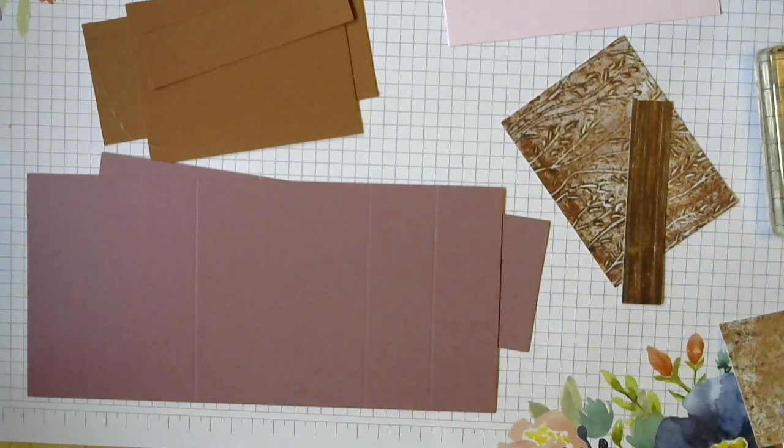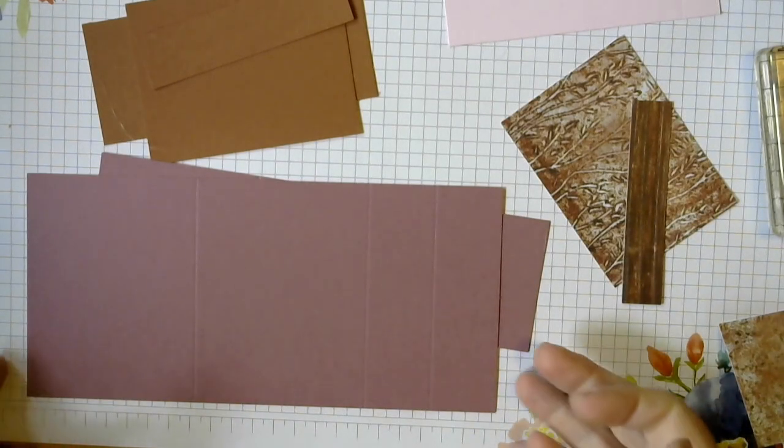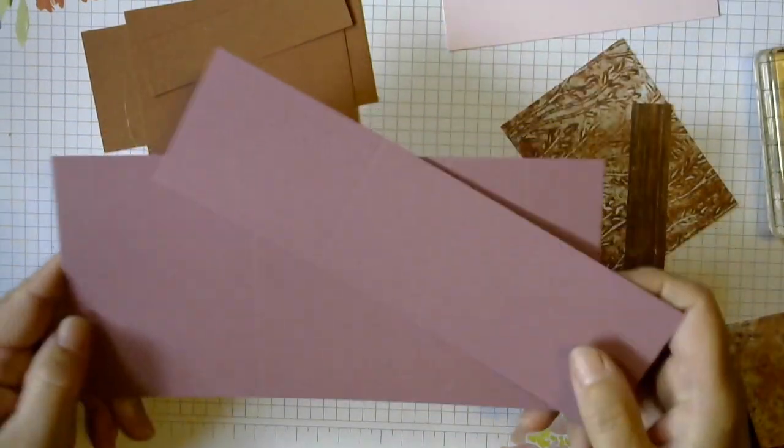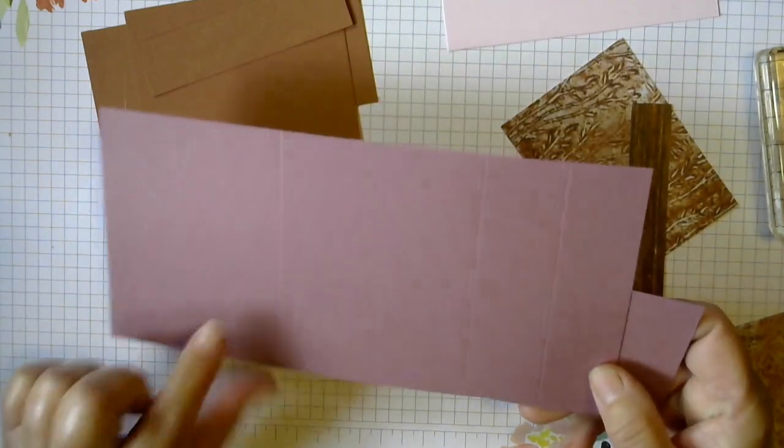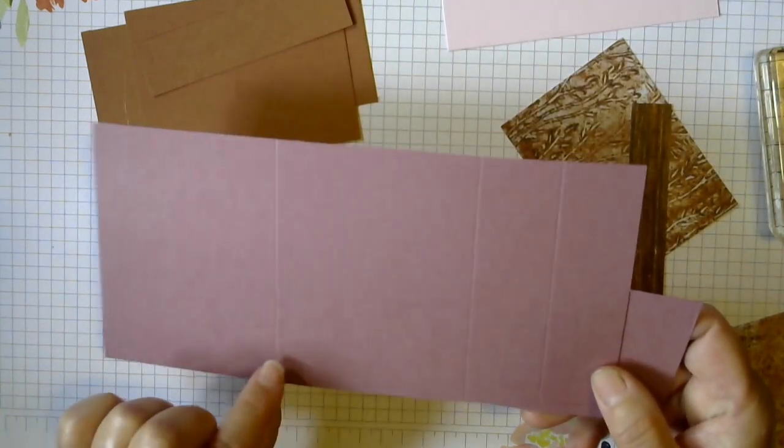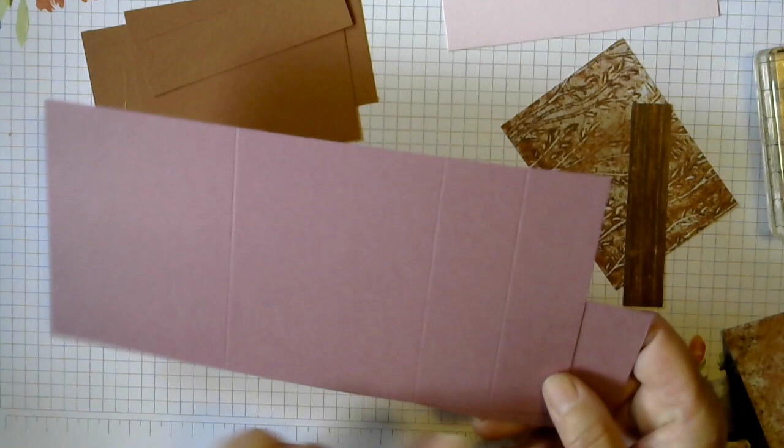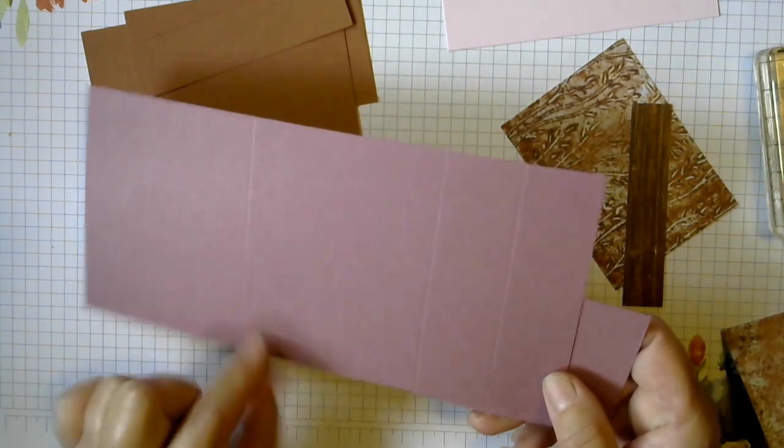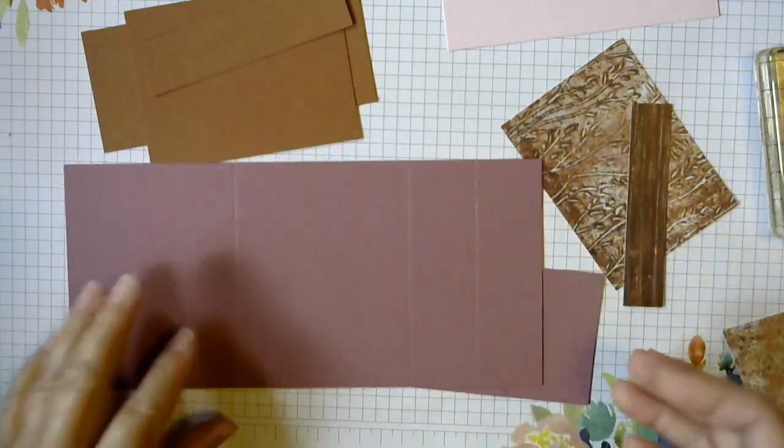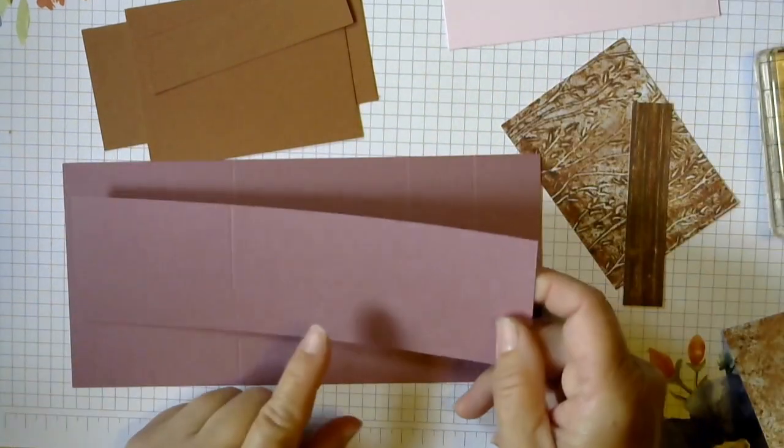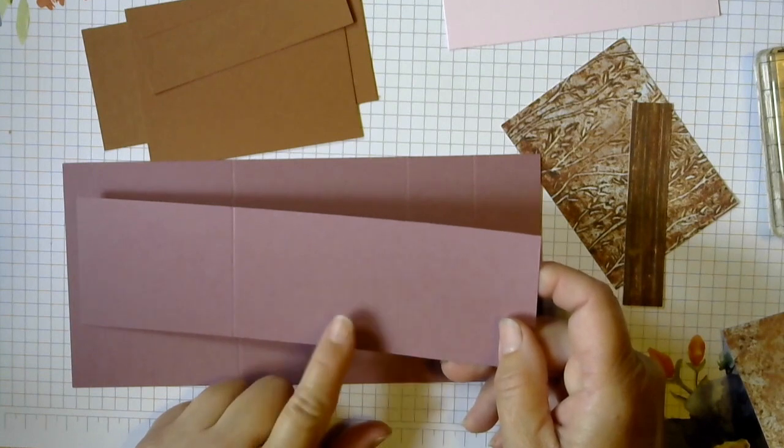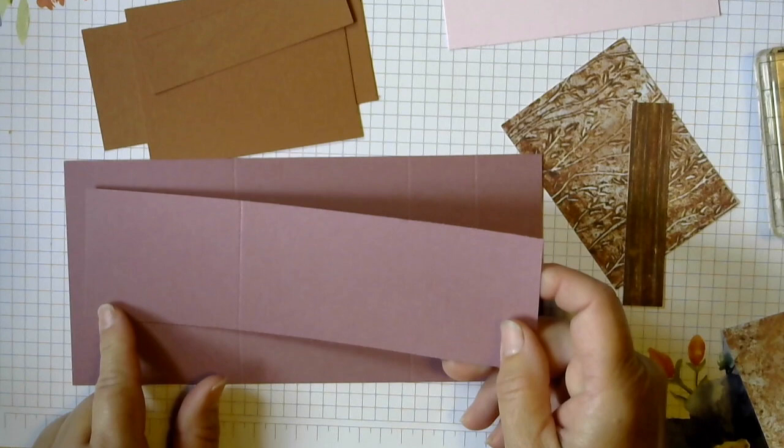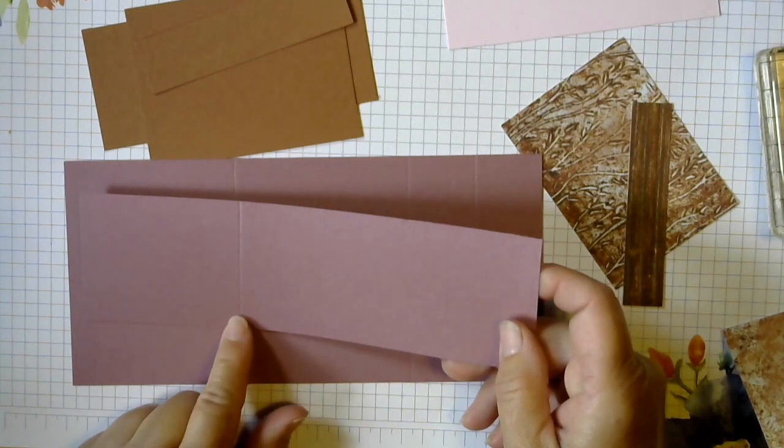Here are our supplies that we're going to need to make this step card. We're going to start with two card bases in Moody Mauve. The first one is 4 and 1/4 by 9, and we've scored it at 1 and 1/4, 2 and 1/2, and 5 and 3/4. I always have trouble with that 3/4 one, remembering that one. Then we have the narrow strip that's going to go over the top. This base is 2 and 1/2 by 8 and 1/2, scored at 5 and 1/2. That one's easier to remember.